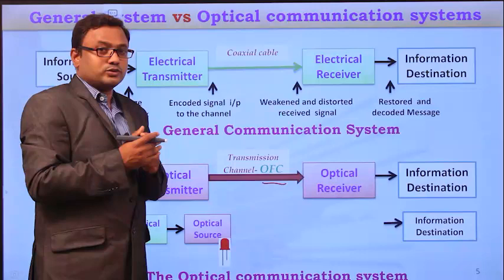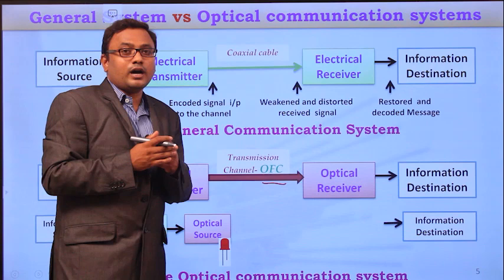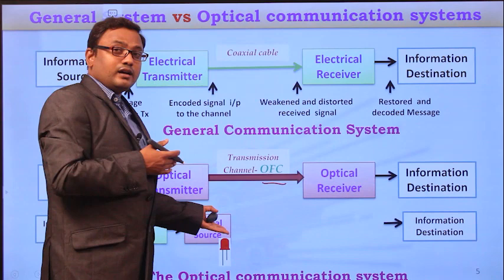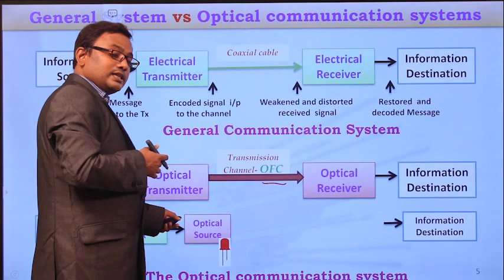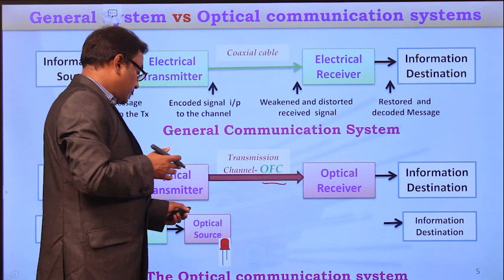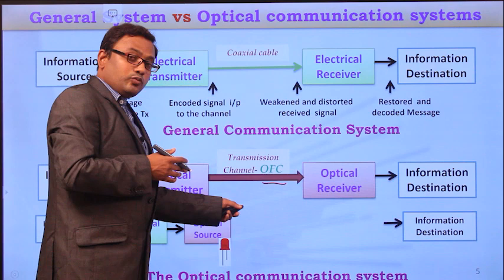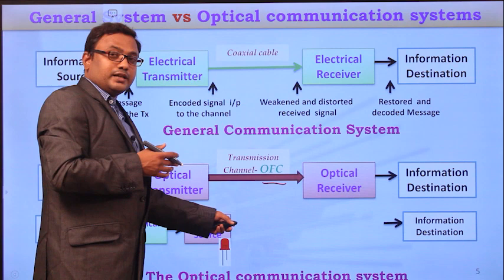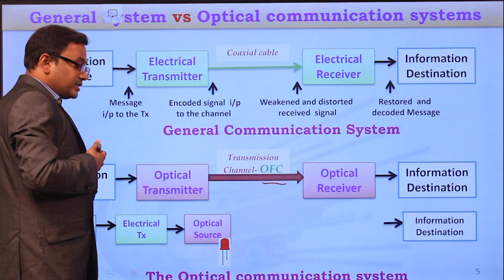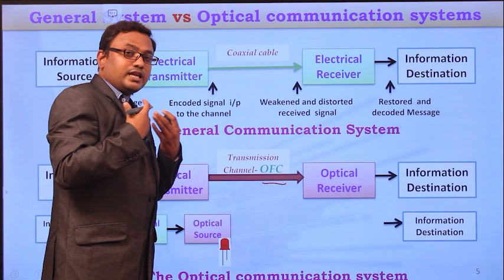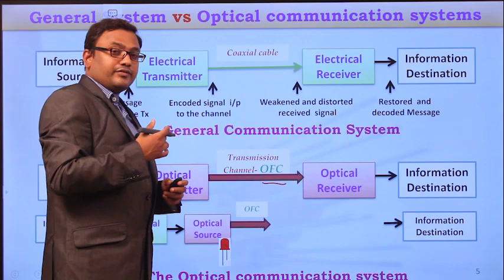Generally, the optical source is either a light-emitting diode (LED) or a laser diode — simple diodes only. This optical source takes the electrical signal as input and provides the light signal as output. The input to the optical source is electrical information, and the output is optical information. At the end of this optical source, whatever information we want to transfer is converted into light form, and that light information is given to the optical fiber cable, which is our transmission medium.